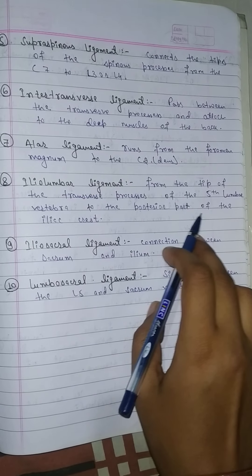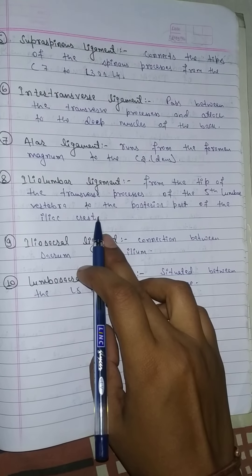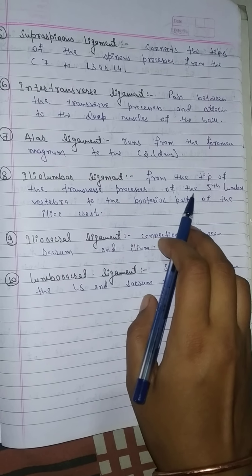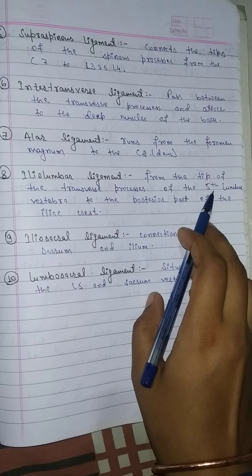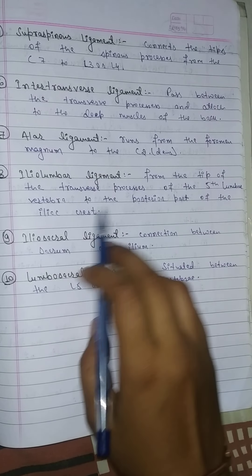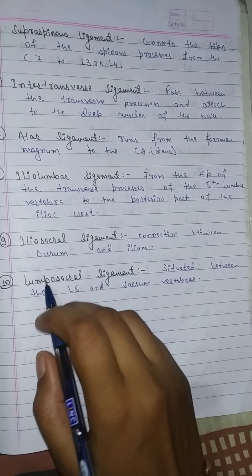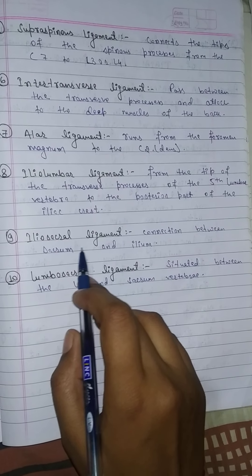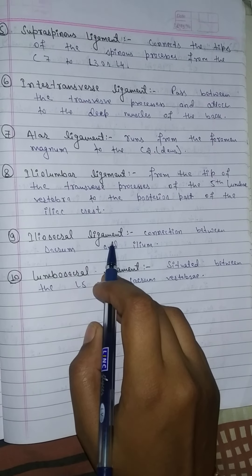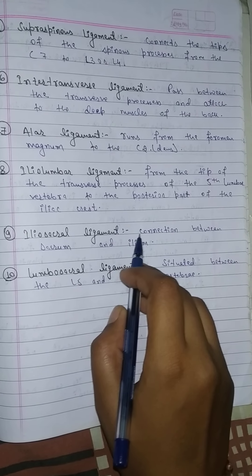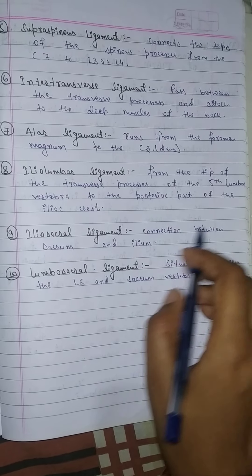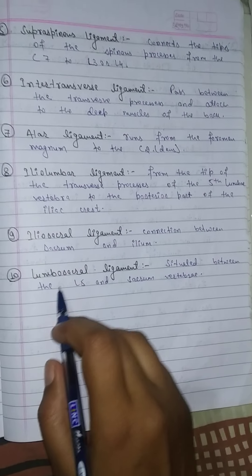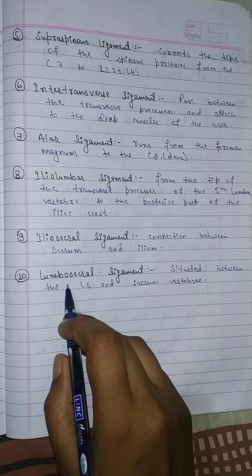The Iliolumbar Ligament runs from the tip of the transverse processes of the fifth lumbar vertebra to the posterior part of the iliac crest. The Iliosacral Ligament is the connection between the sacrum and the ilium.